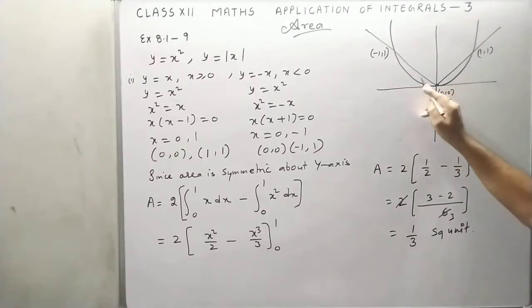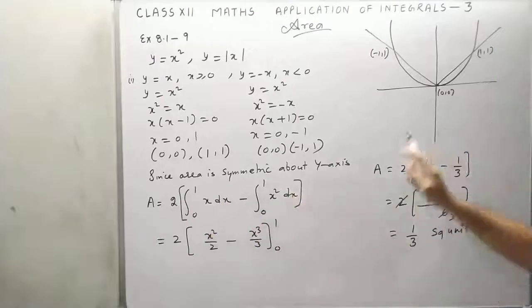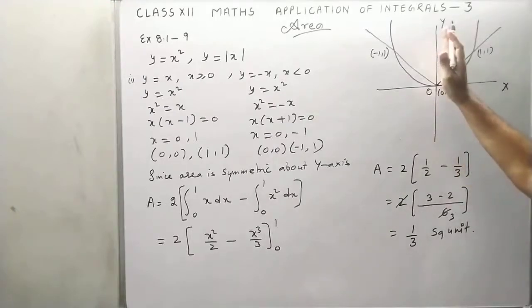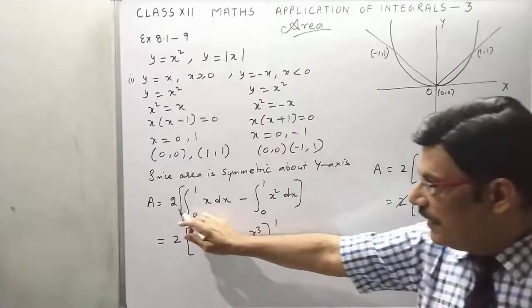It means area of this part and this part. Now area is symmetric about the y-axis. You can see this is y-axis, x-axis, origin. This is symmetric about y-axis, y-axis like mirror. So we will double the area and find the single area.